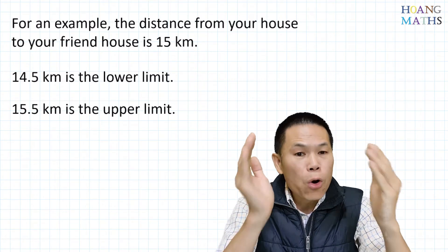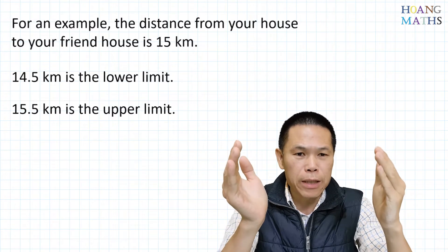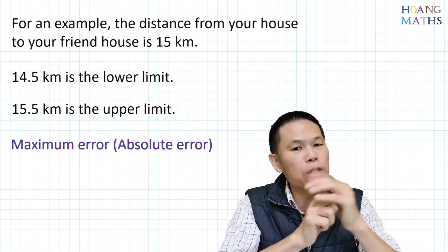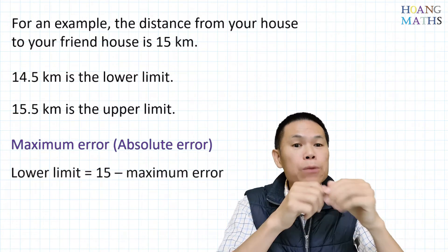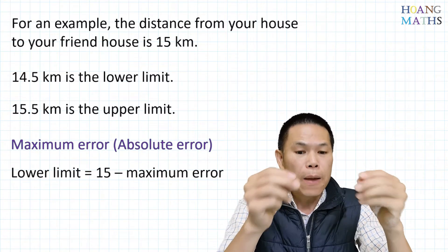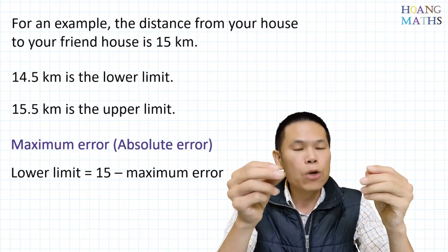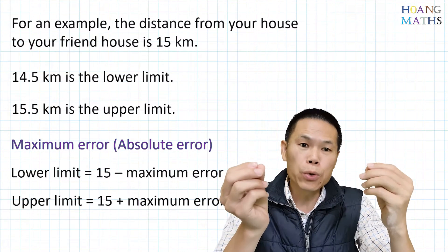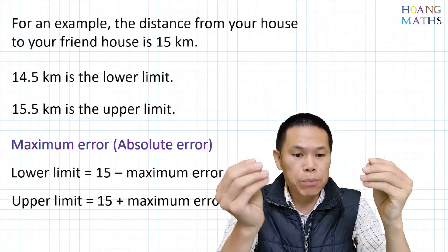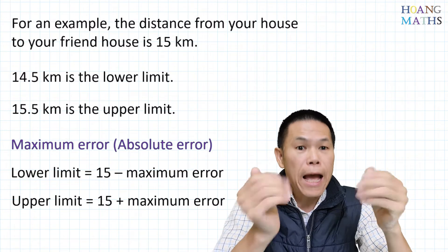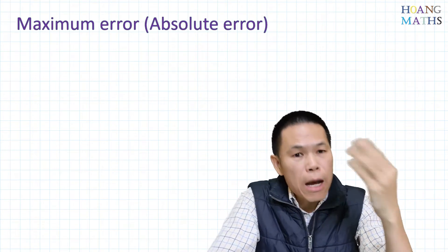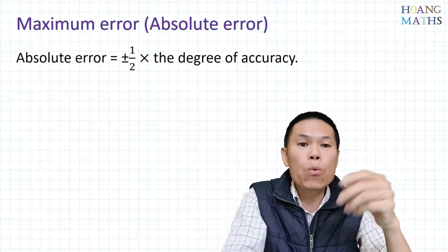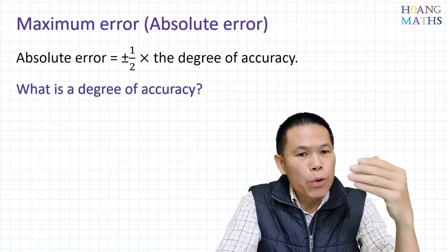So how do we work out the lower limit and the upper limit? What we do is find the maximum error first — or absolute error. Then we use 15 kilometers minus the absolute error to get the lower limit, and 15 plus the absolute error to find the upper limit. The absolute error is always half of the degree of accuracy.